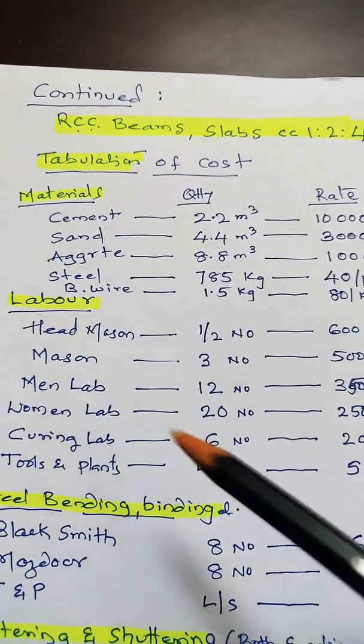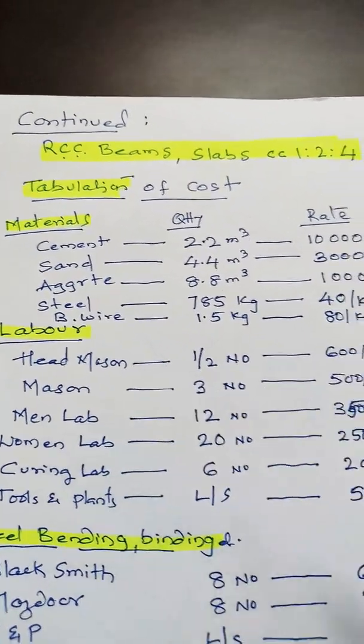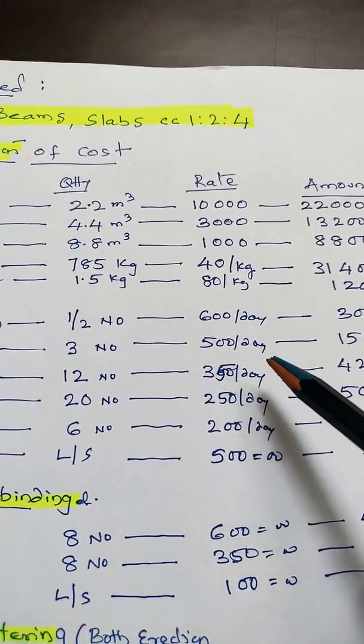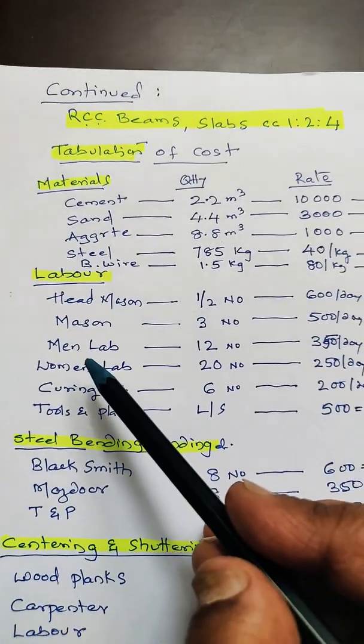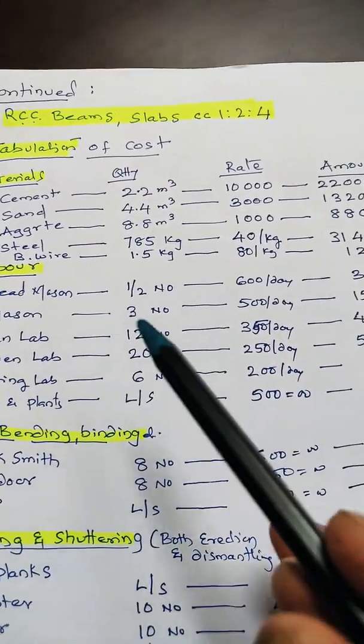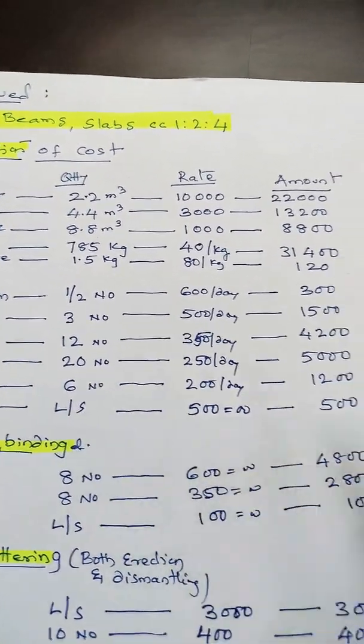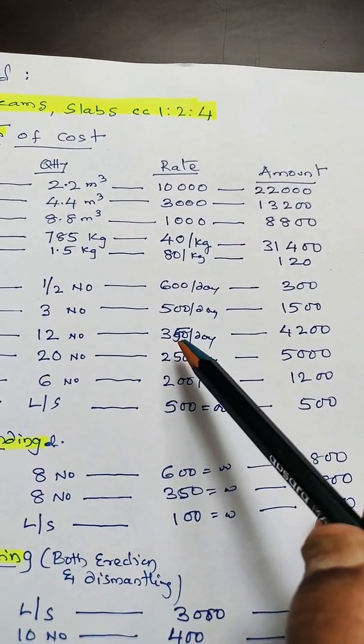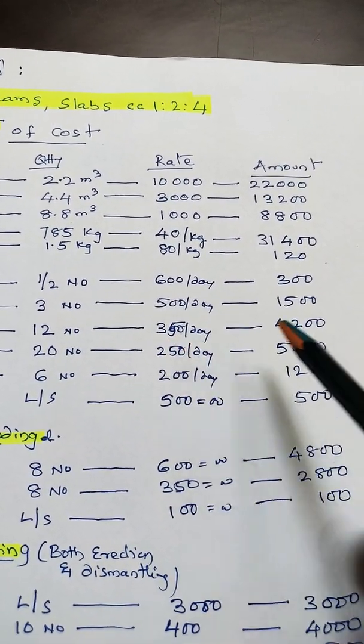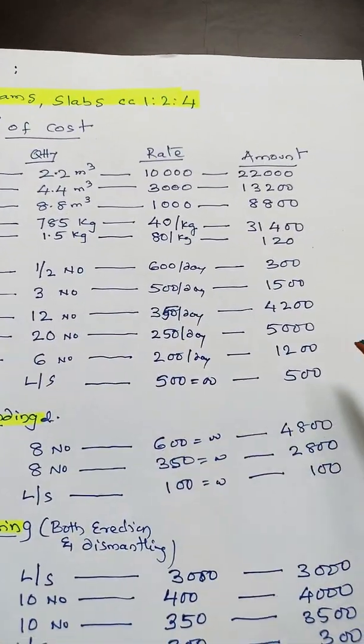Skilled labor or masons at 500 rupees per day for 3 days = 1,500. Men laborers: 12 numbers required to mix and transport at 350 per day = 4,200. Women labor: 20 numbers at 250 per day = 5,000.